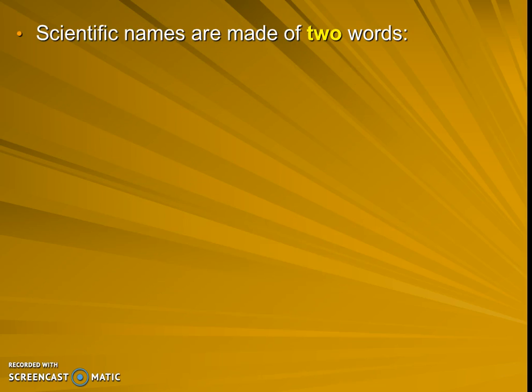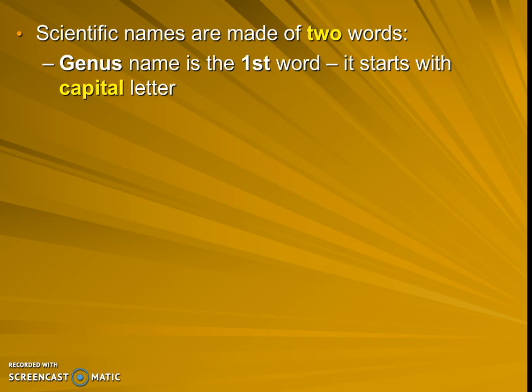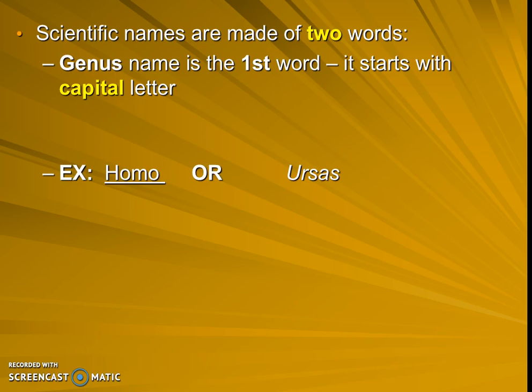It's binomial nomenclature, meaning it has to have both of those two words, and the two words mean something. The first word is considered a genus — this is a new vocab word. Genus is the first word. Notice that in Canis lupus, the genus is Canis, and it's capitalized.